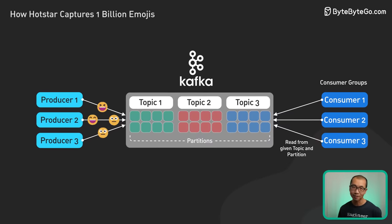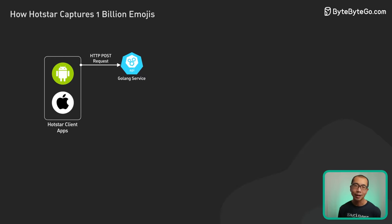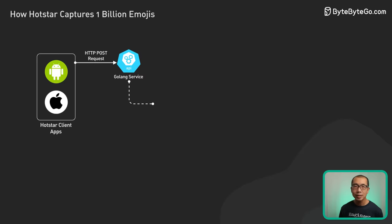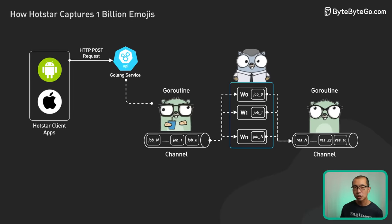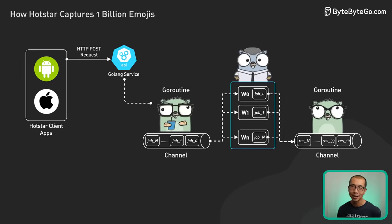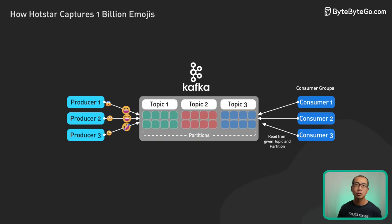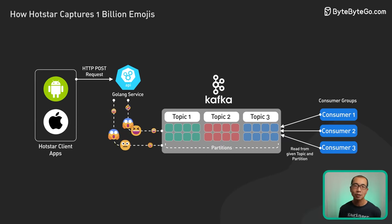The client apps transmit emoji reactions to API servers built with Golang, an open-source programming language developed by Google. The lightweight Go routines enable massive concurrency, while Go's channels provide a communication mechanism to exchange data safely between Go routines. Together, these primitives allow Hotstar's API to accept incoming reactions from millions of viewers, batching them using channels, and asynchronously writing the events to Kafka topics in batches. This setup allows Hotstar to efficiently handle millions of concurrent emoji reactions without overwhelming the servers.